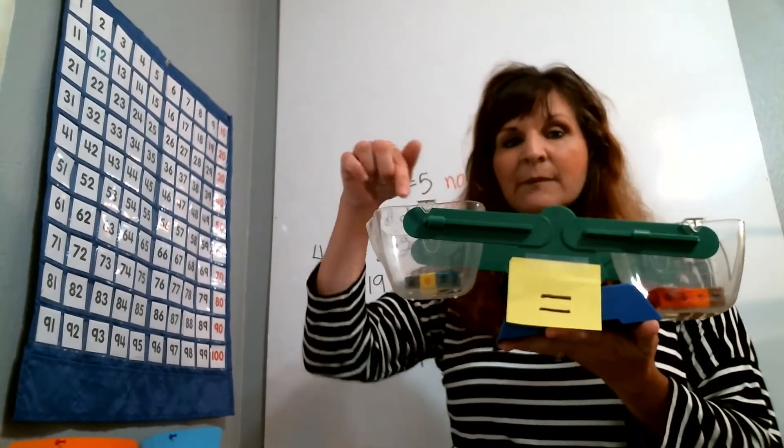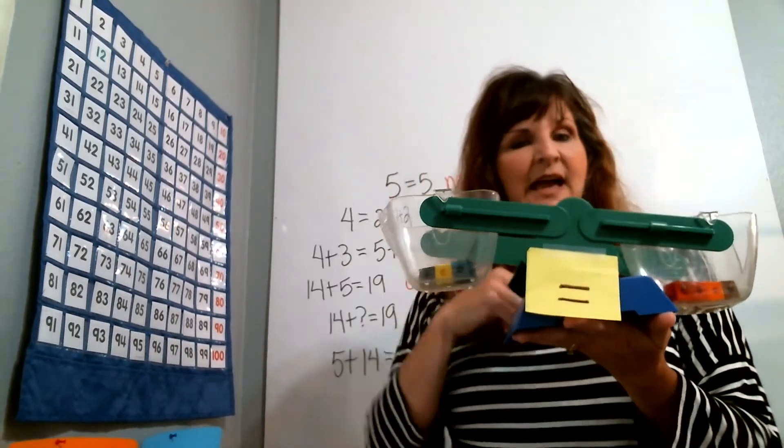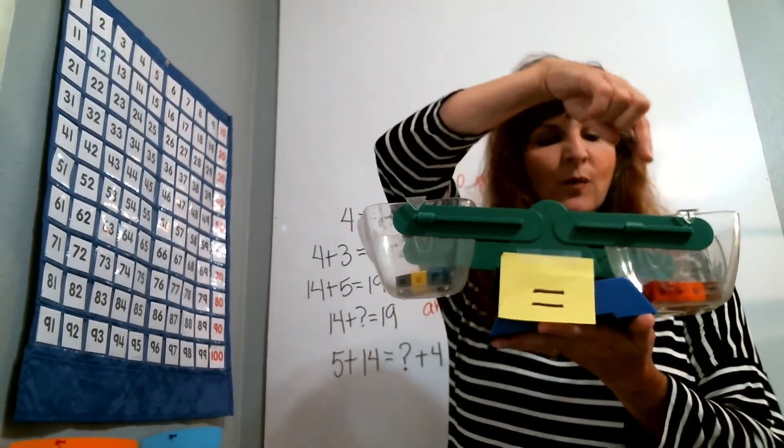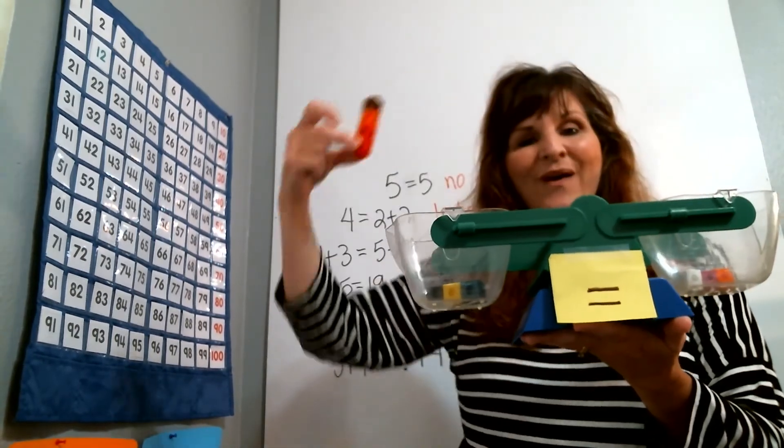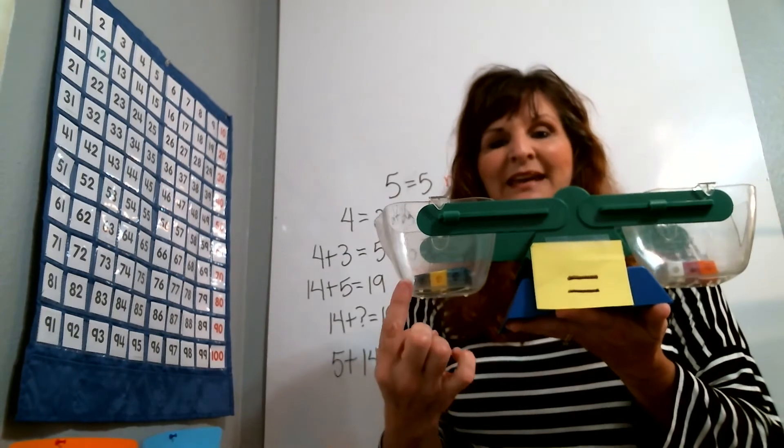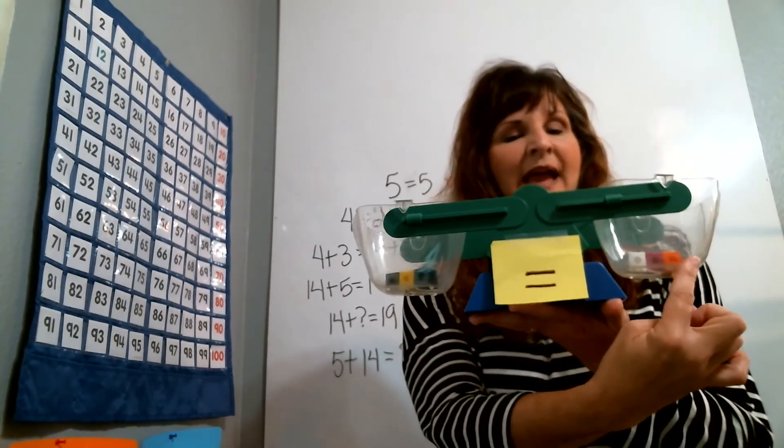No, it's not balanced. How many do we need to add to this side? Or how many do we need to take away here to make it balanced? Oh, we have to take away 4 so that 3 has the same value as 3.